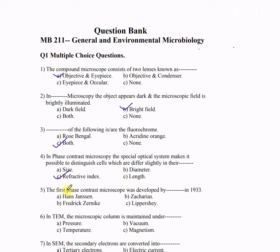Question 5: The first phase contrast microscope was developed by dash in 1933. Options: A) Hans Jensen, B) Zaccharias, C) Frits Zernike, D) Lippershey. The correct answer is option C — Frits Zernike.